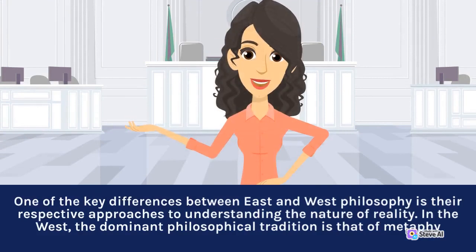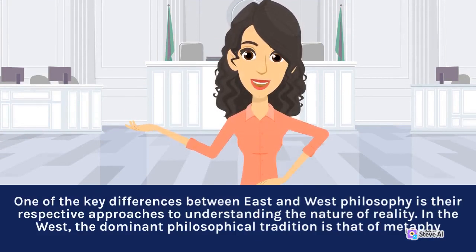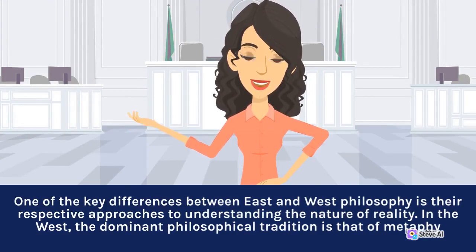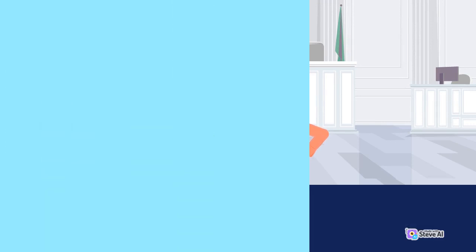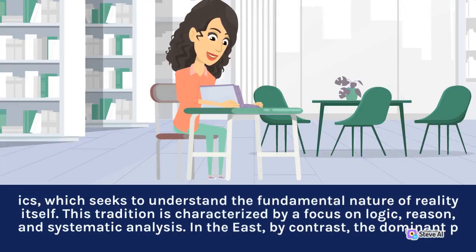One of the key differences between East and West philosophy is their respective approaches to understanding the nature of reality. In the West, the dominant philosophical tradition is that of Metaphysics, which seeks to understand the fundamental nature of reality itself. This tradition is characterized by a focus on logic, reason, and systematic analysis.